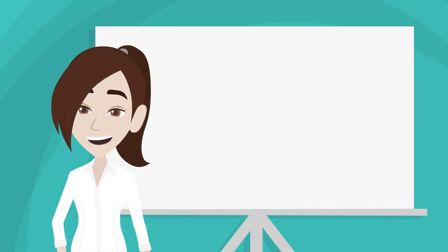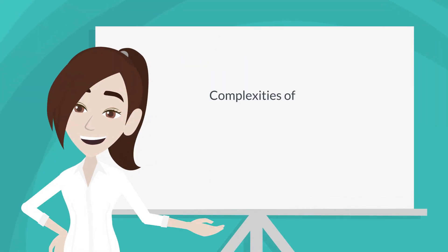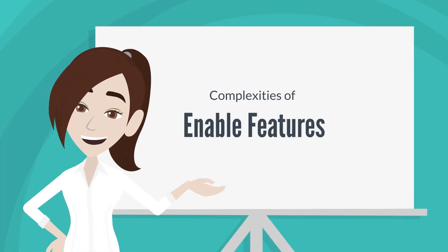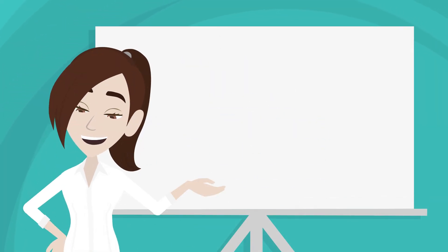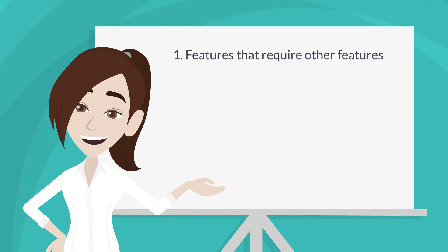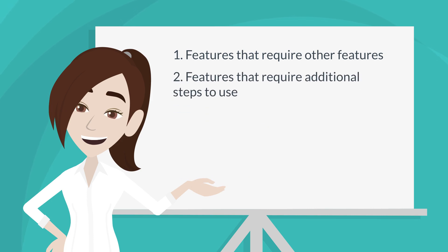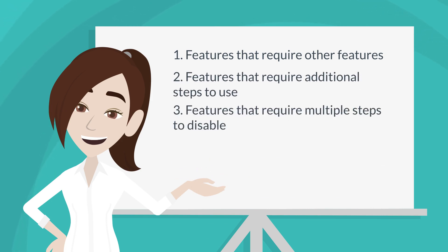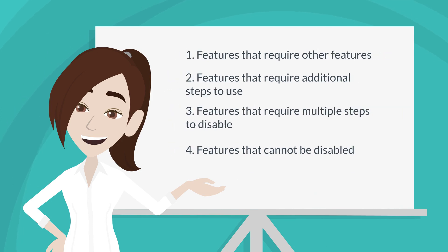Let's take a look at some of the more complex aspects of certain features in Enable Features. There are four particularly complex aspects: features that require other features, features that require additional steps to use, features that require multiple steps to disable, and features that cannot be disabled.